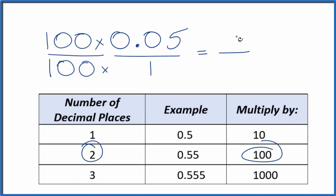So 100 times 0.05, that's just 5. 100 times 1, that's 100.